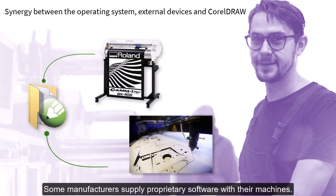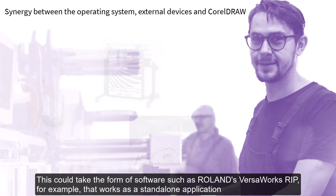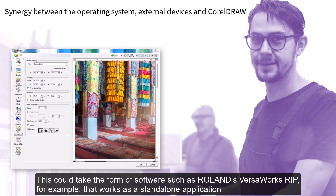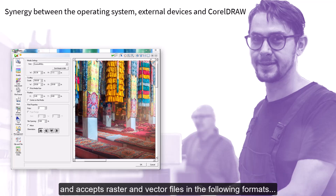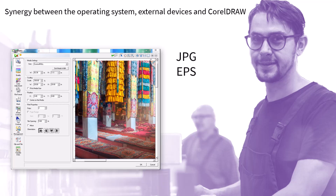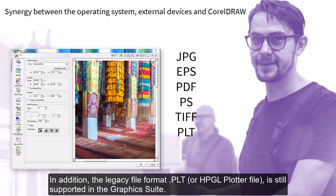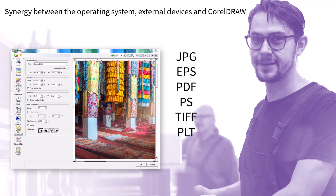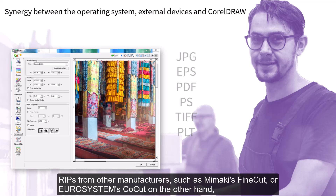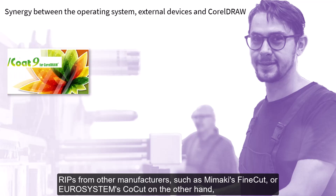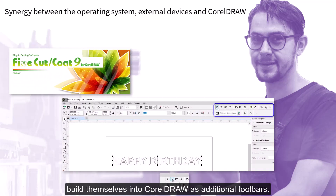These issues affect not only CorelDraw itself — design work needs to be output to a printer, plotter, or maybe an engraving machine. Some manufacturers supply proprietary software with their machines. This could take the form of software such as Roland's VersaWorks RIP, for example, which works as a standalone application and accepts raster and vector files in the following formats: JPEG, EPS, PDF, PostScript, and TIFF — all export formats that are supported by CorelDraw. In addition, the legacy file format PLT or HPGL plotter file is still supported in the Graphics Suite.